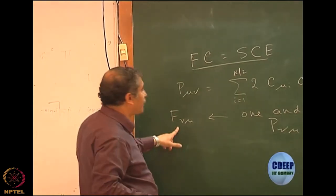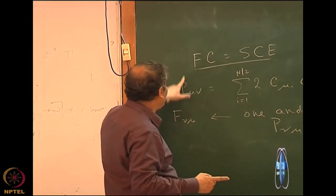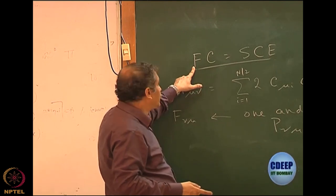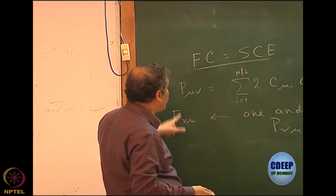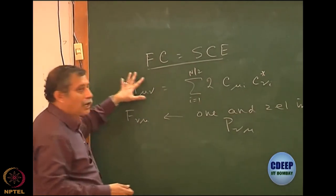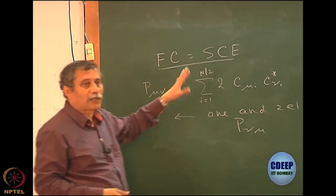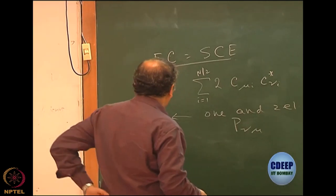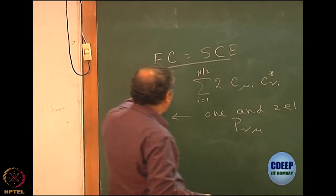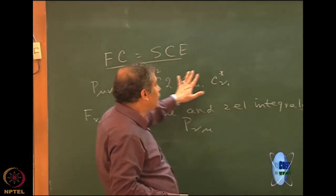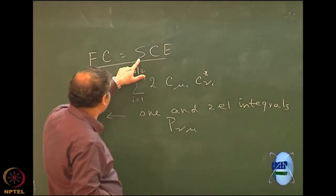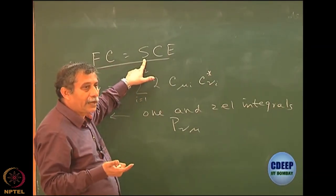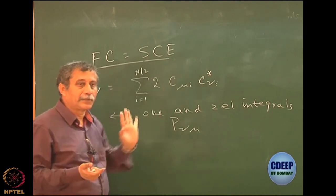After constructing the Fock matrix at every iteration, you have to solve this equation. The problem with this equation is that the original basis sets are not orthonormal. That is the reason it did not become an eigenvalue equation. If they were orthonormal, then S would become a unit matrix, and this would automatically be an eigenvalue equation.